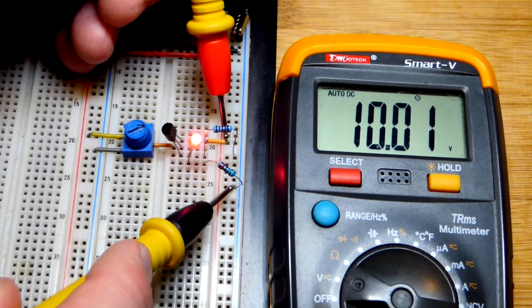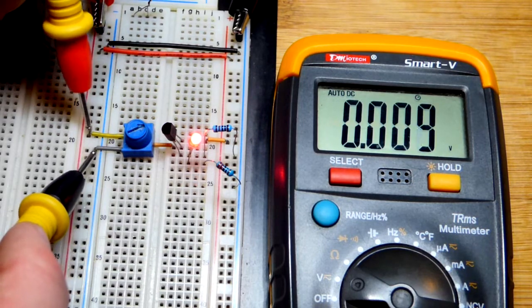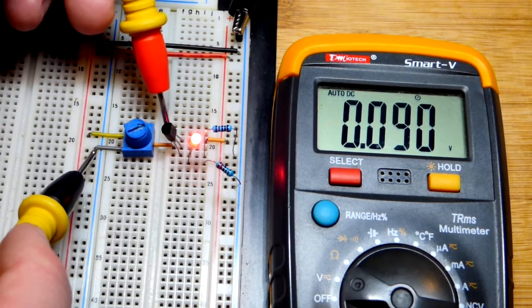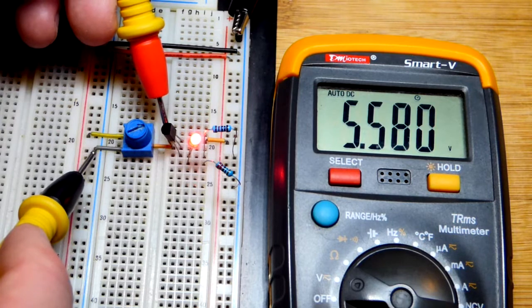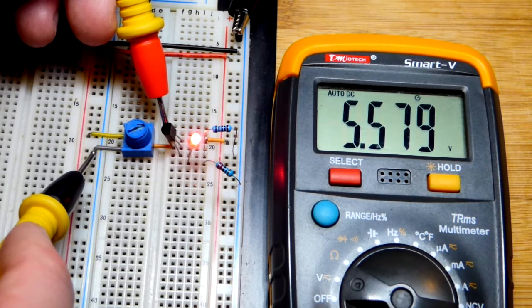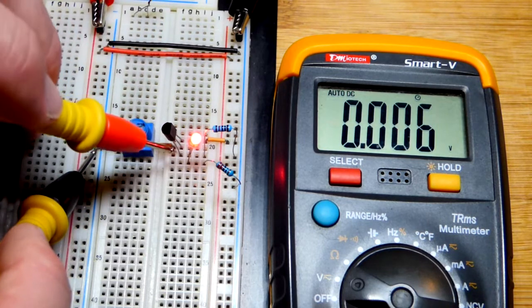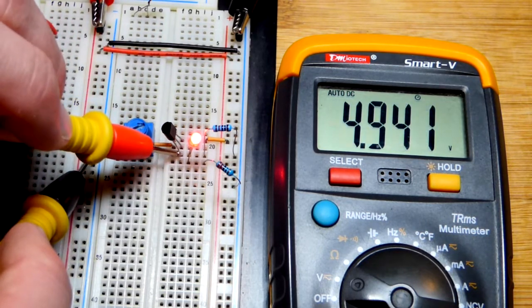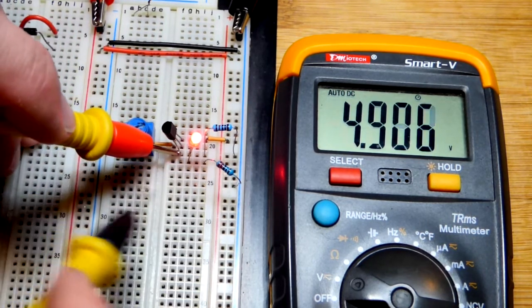But in any case there you can see 10 volts total for the supply, no matter where you measure the two rails right there. Now we will measure the output of the trim pot, and about 5.6 volts as I said before, approximately.